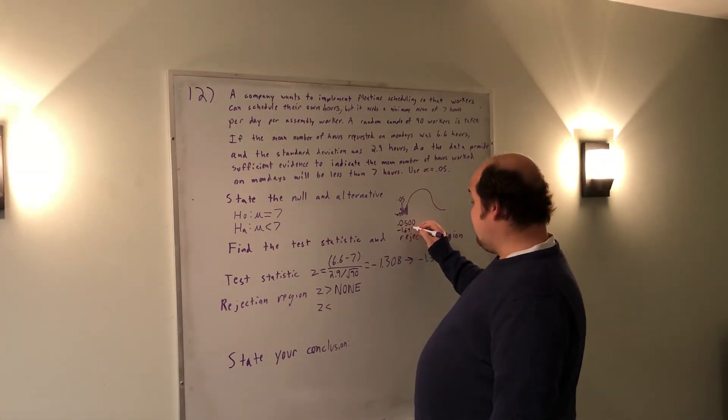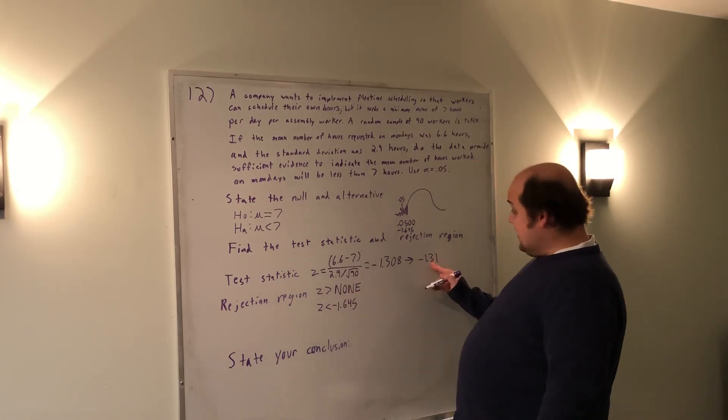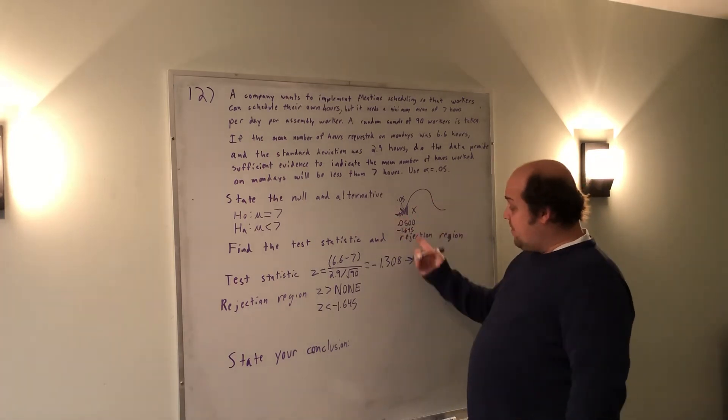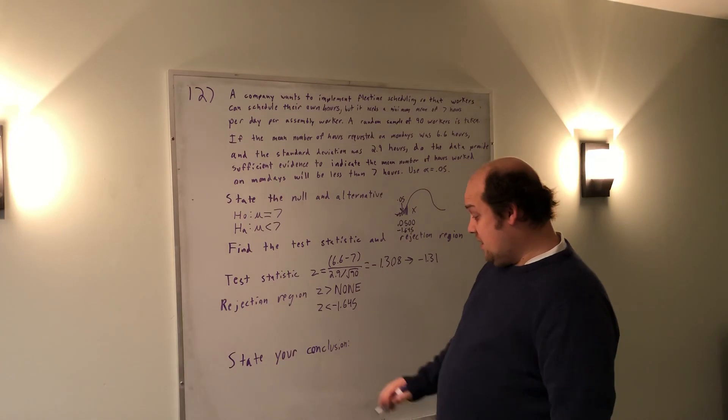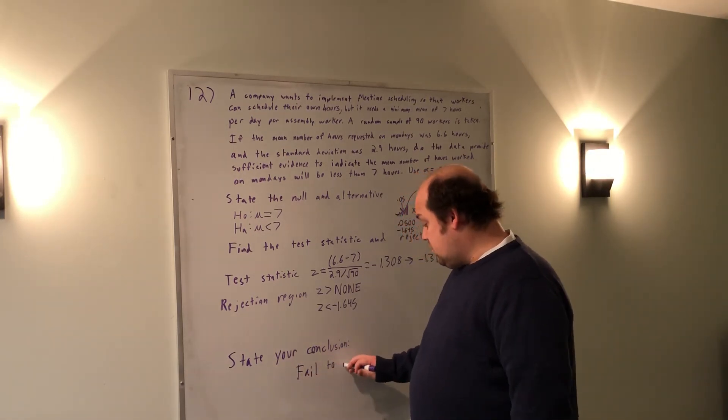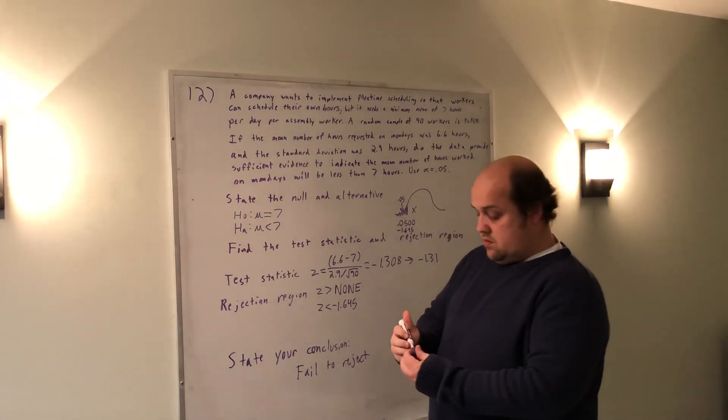If I had to do it from scratch and look up this 0.0500, it would point me to negative 1.645. So here z is less than negative 1.645, and that's my region of rejection. This negative 1.31 is not to the left of negative 1.645. That's why I would fail to reject.